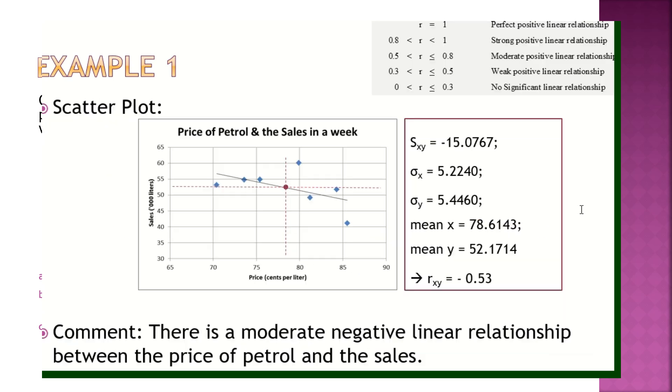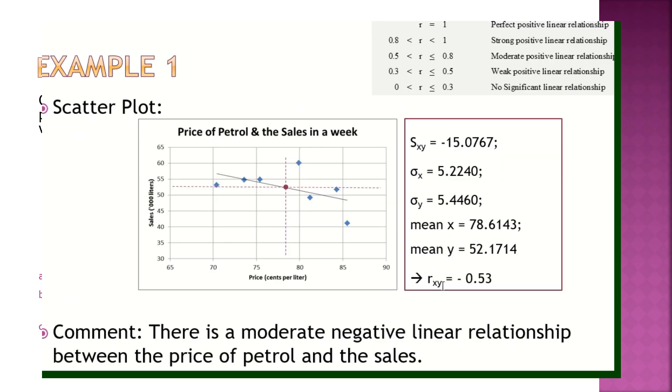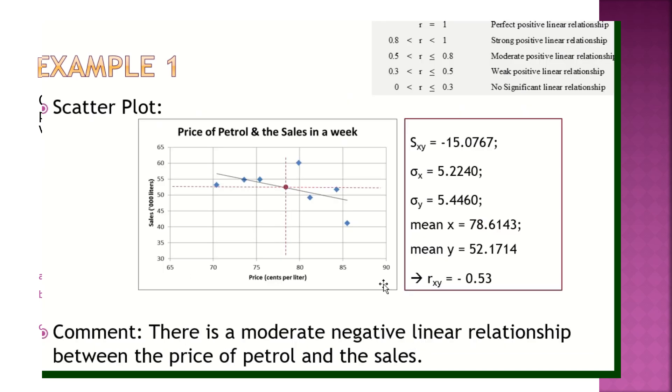All you have to do is plug in the values, the pairs of data here into the calculator and calculate r. So let's look at the examples. So the first part of the question is to plot a scatter diagram and calculate r_xy. So plot the scatter diagram. This is what you need to plot for me. Same way, the way I taught you. So in this case, they already gave you what is x, what is y, you just follow. Price per liter x and y is sales. You can see it doesn't start from zero.